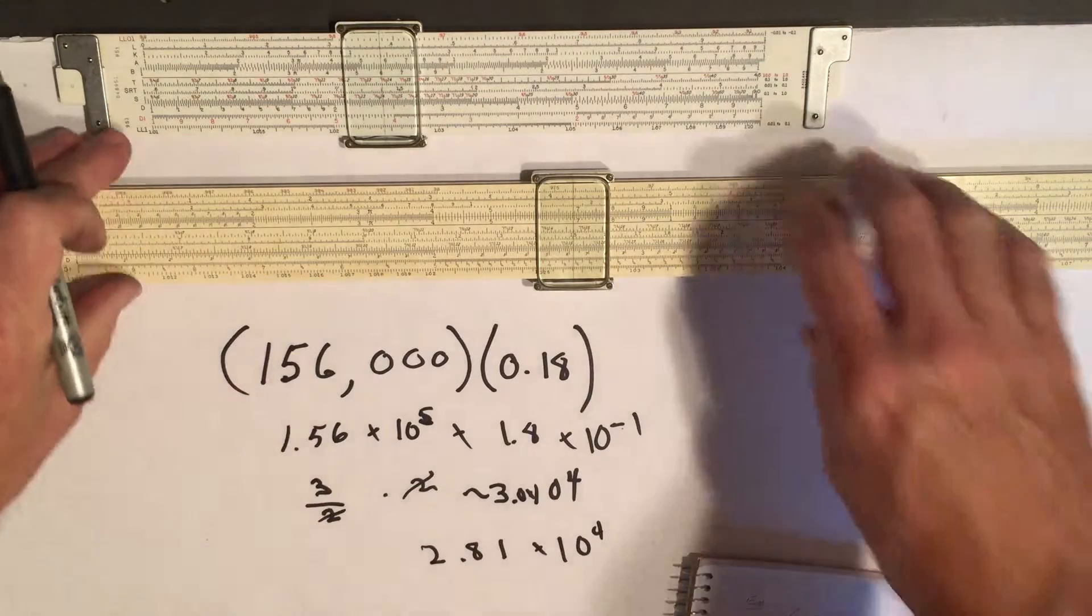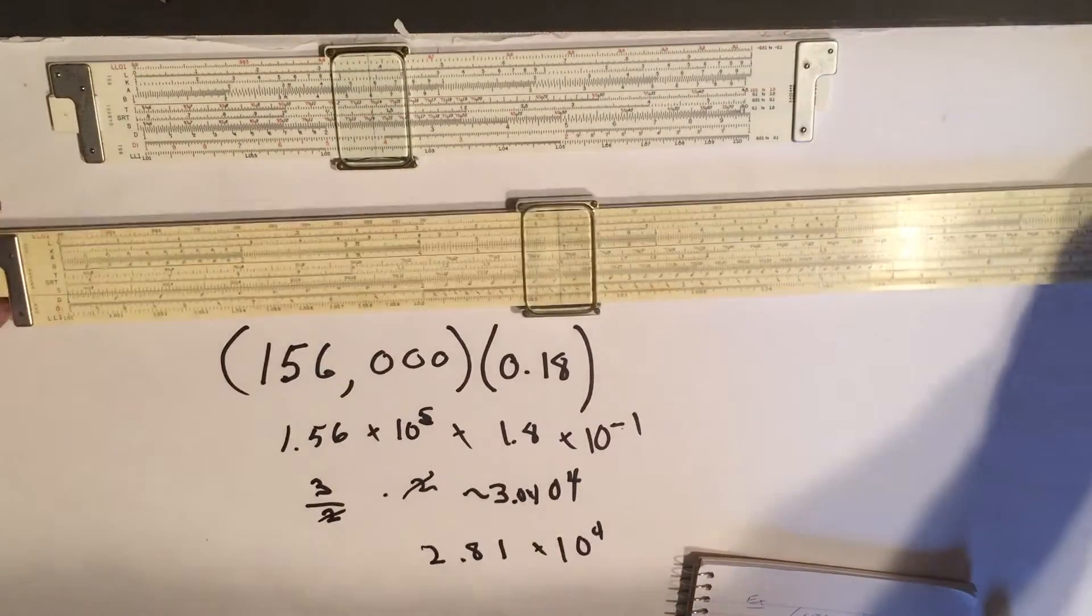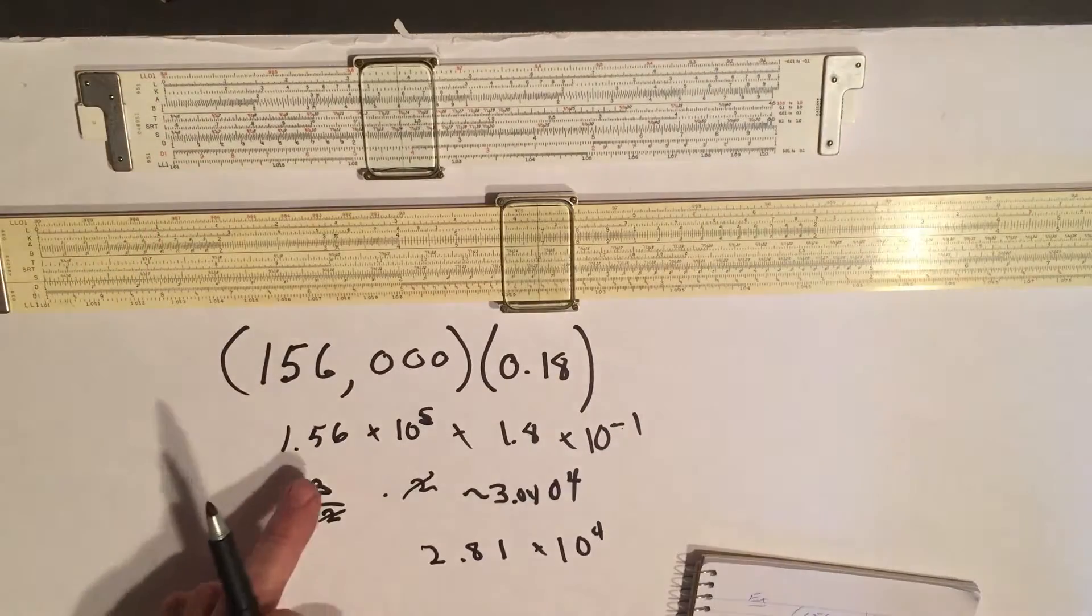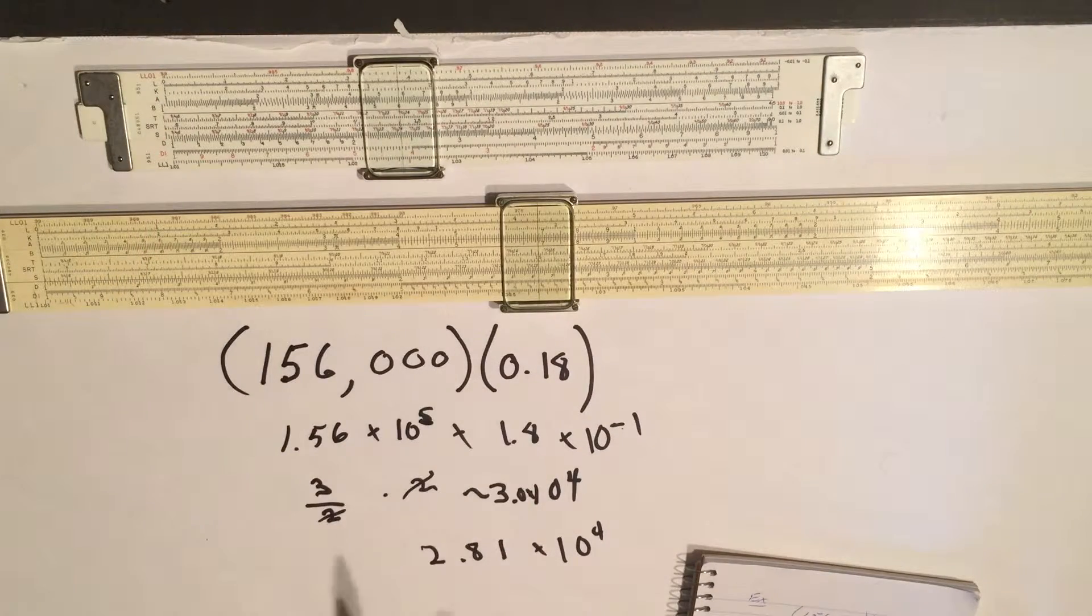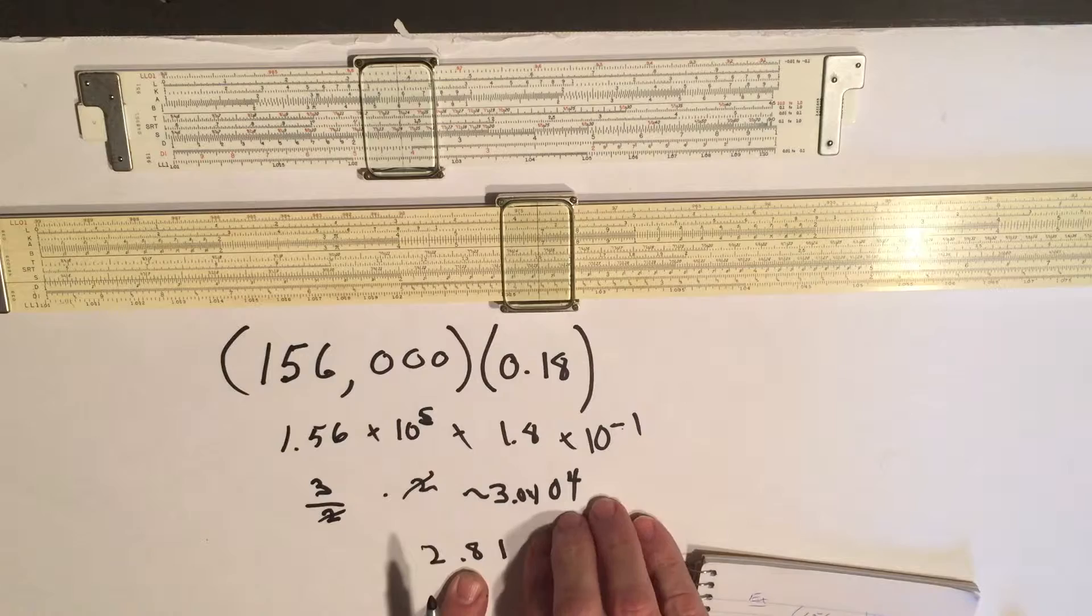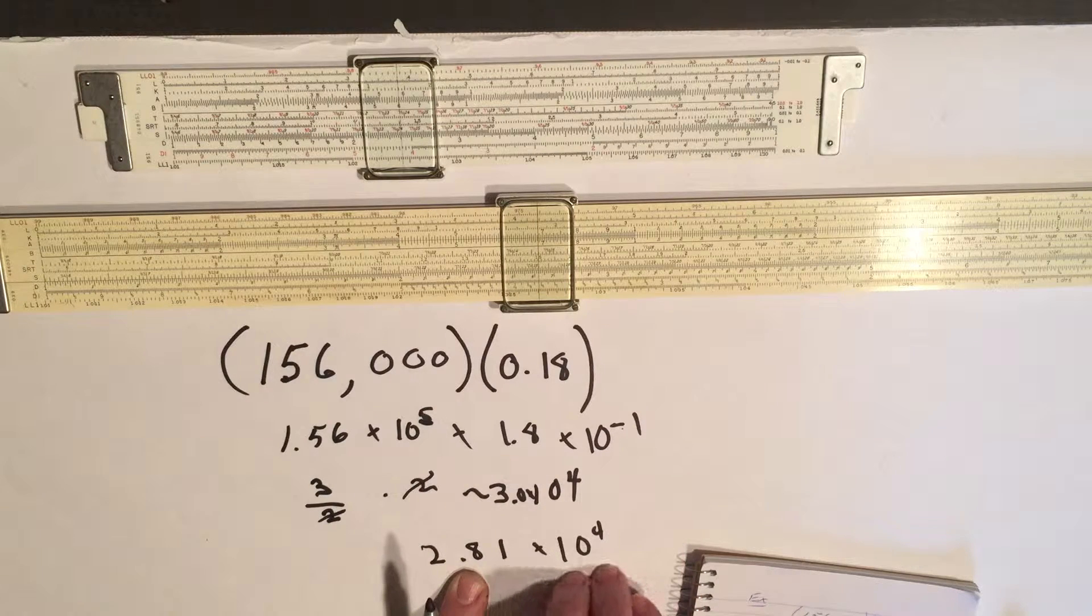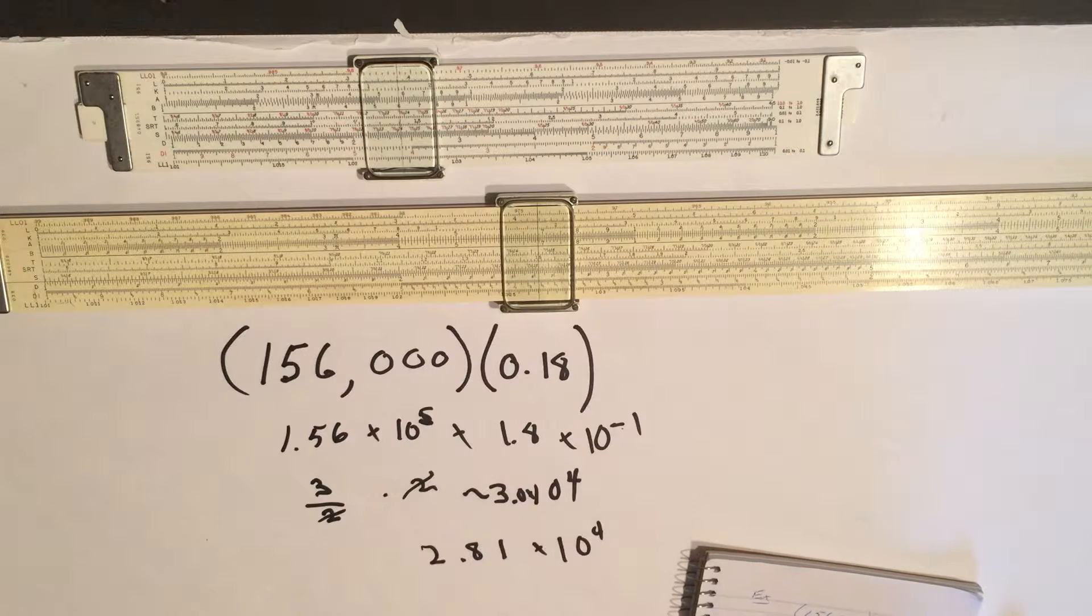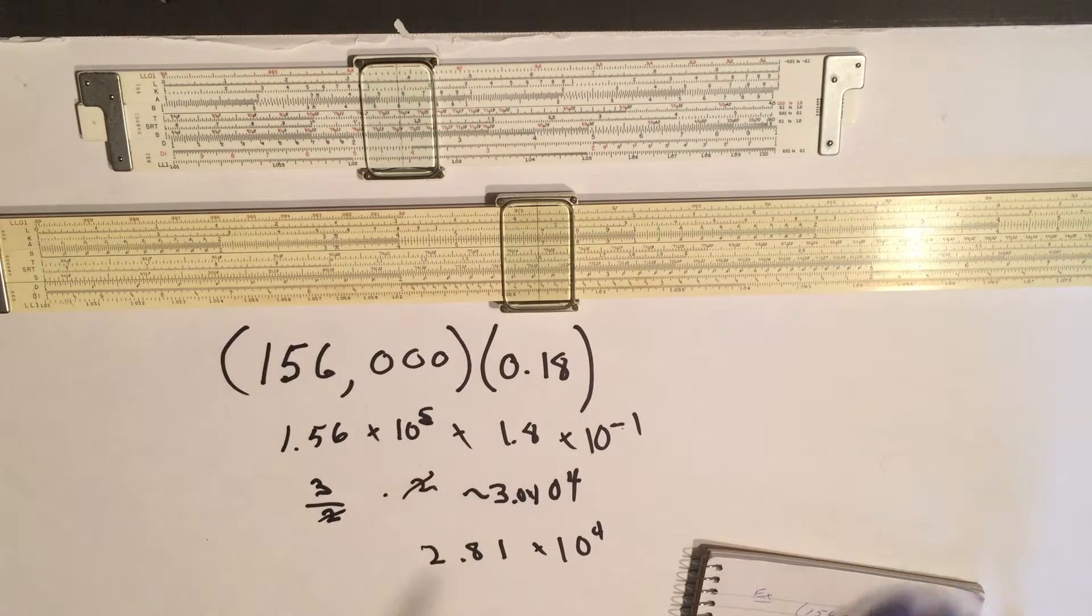Of course if you went through the slide rule, I've got a real long one here which you get higher precision, but if you just went through using the single digits, the 1.56 times 1.8, you get 2.81, and the secret now is just to figure out what the decimal place is.